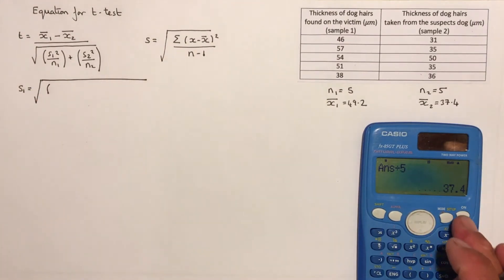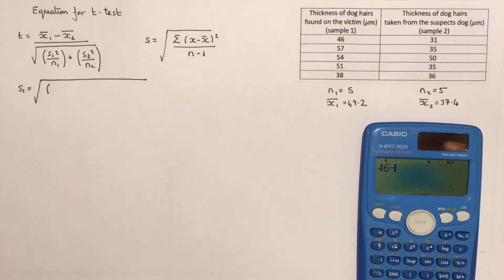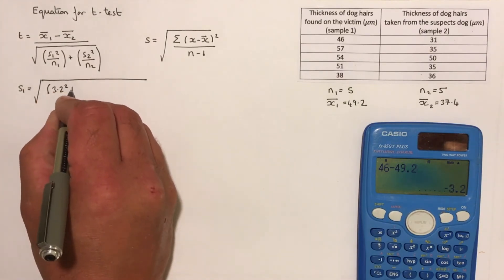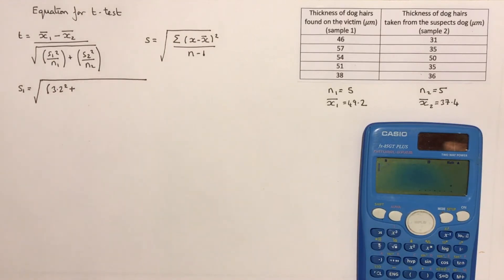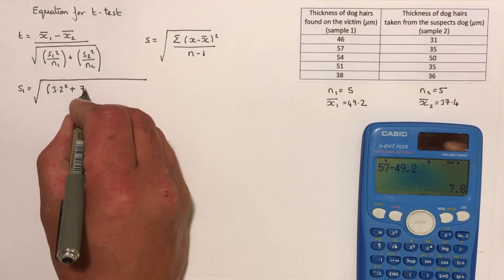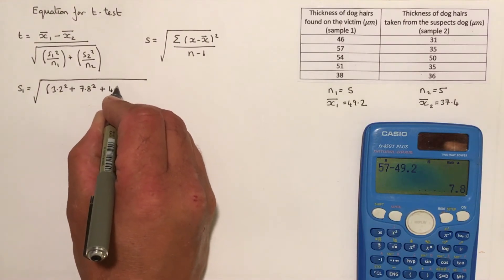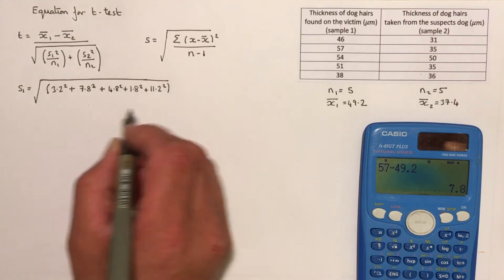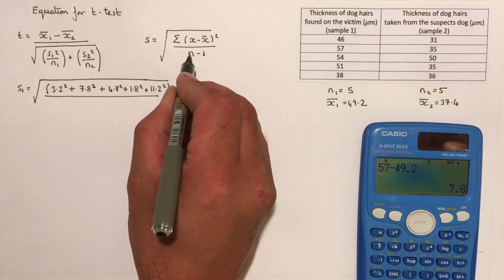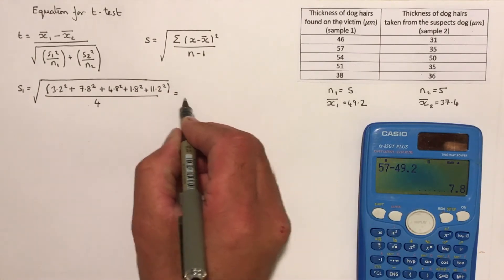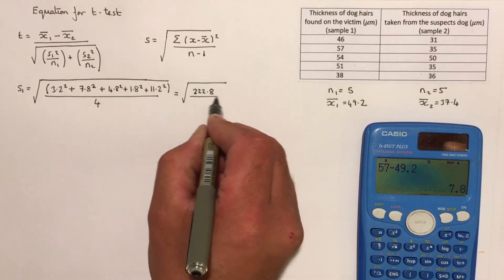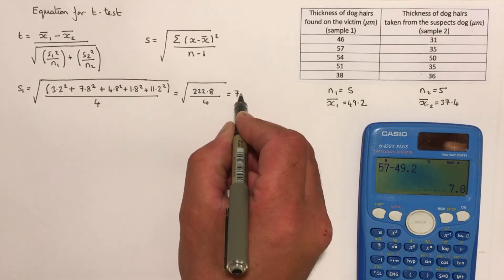Next I work out the standard deviation of sample one by summing the squares of the differences between each data point and the mean. For example, 46 minus 49.2, then 57 minus 49.2 which gives 7.8, and so on for all data points. Dividing by n minus one — which is four — and finishing the calculation gives a standard deviation of 7.46 for sample one.